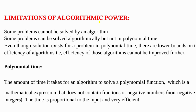First we have limitations of algorithmic power. Each problem can be solved using a particular algorithm, but not all problems can be solved using algorithms. Some problems cannot be solved by an algorithm, and some problems can be solved by an algorithm but not in polynomial time. Even though a solution exists, there are lower bounds on efficiency of an algorithm — that is, efficiency cannot be improved further. For example, the travelling salesman problem or Hamiltonian problem: whatever the efficiency, we cannot improve it further. That is the limitation of algorithmic power.